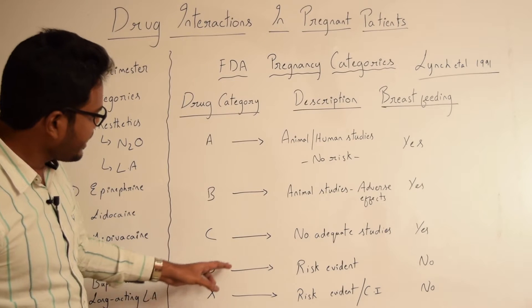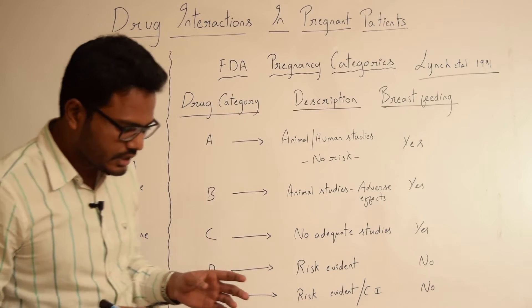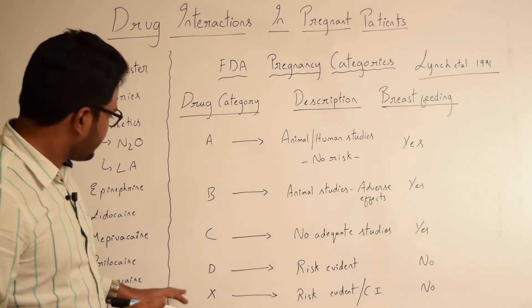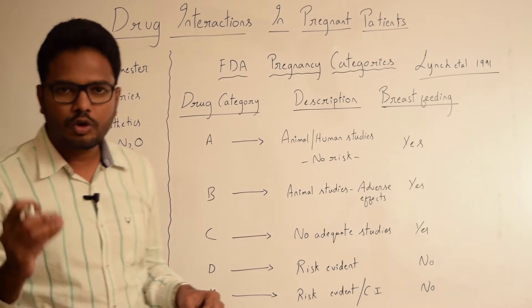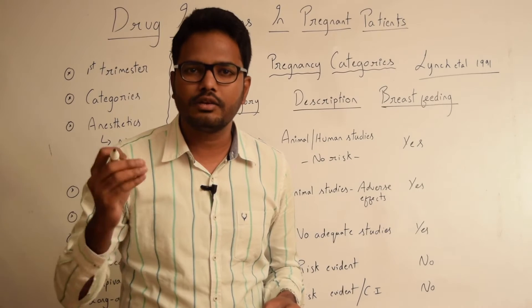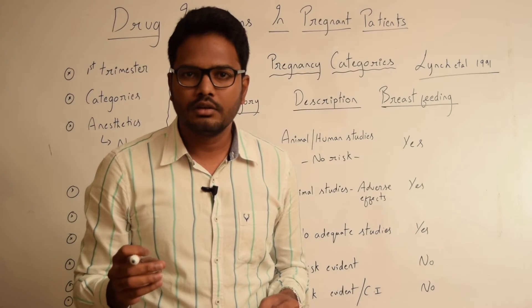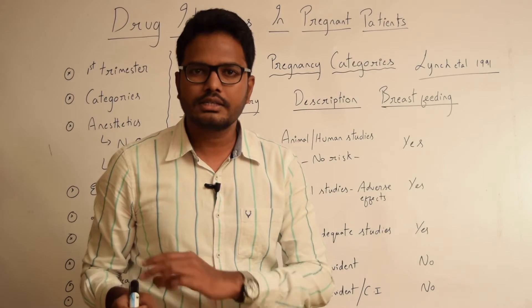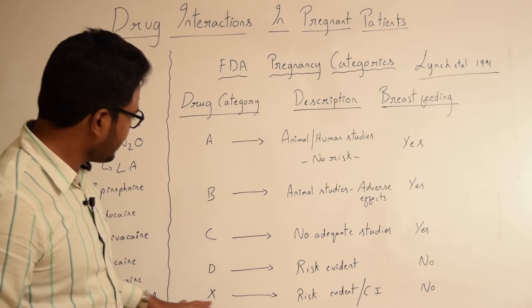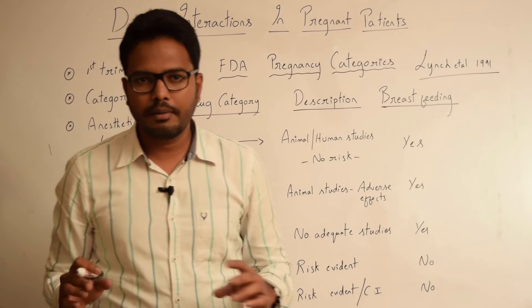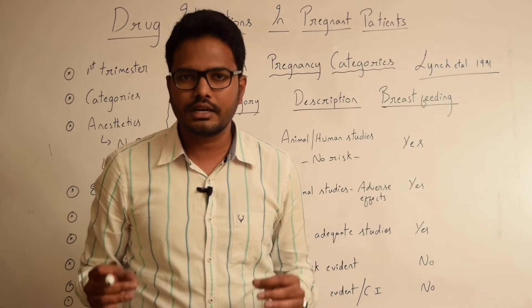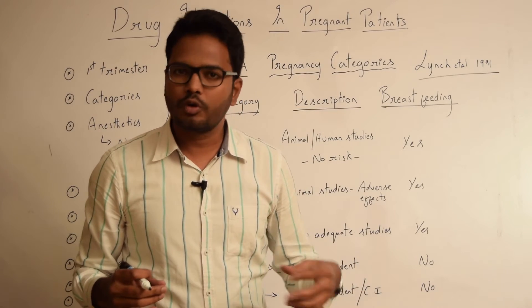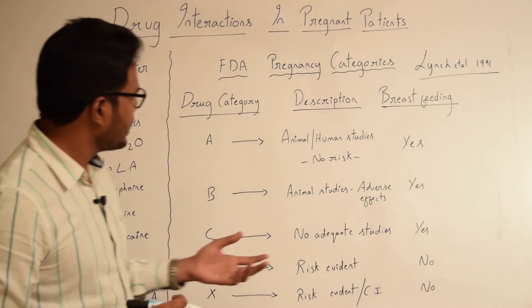Drug category D includes those drugs which have significant risk on fetus. And drug category X includes those drugs which have a definitive risk on fetus. Either in animal or human studies the risk to fetus is established. These X category drugs should not be prescribed to patients. In other words, these drugs are contraindicated in pregnant patients and in those women who are going to become pregnant.